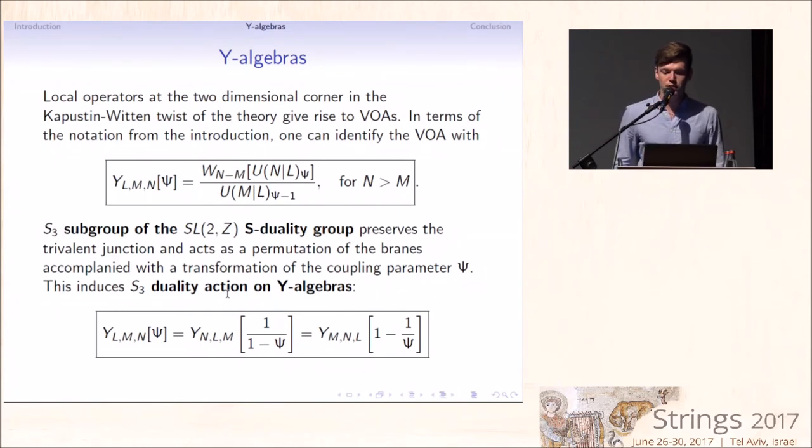We look at the Kapustin-Witten twist of the theory and concentrate on local operators at the two-dimensional corner. This gives rise to vertex operator algebras, something that we explain in our paper, and I don't have time to discuss it here. In terms of the notation that I introduced in the introduction, to each number of D3 branes L, M, and N and coupling parameter psi, one associates vertex operator algebra that can be constructed as a composition of the Drinfeld-Sokolov reduction and coset of supergroup Kac-Moody algebra.